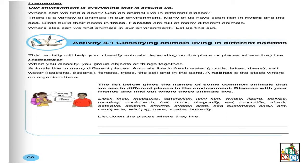Let us find out! Now, we will do activity 4.1: Classifying animals living in different habitats. Alors, cette activité sera par rapport au fait de classifier les animaux dans leurs différents habitats. Comme on peut le voir ici, on a des exemples. Par exemple, birds, c'est par rapport aux trees. Fish, c'est rivers, sea et ainsi de suite. On va apprendre les animaux et leurs différents habitats, les endroits où ils vivent. This activity will help you classify animals depending on the place or places where they live.